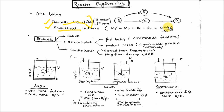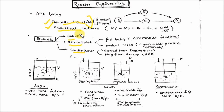A reactor is the vessel in which a biological process is carried out. A biological process is the conversion of substrate into product via cell mass or enzyme. Generally, three types of processes occur in reactor engineering: the first is batch, the second is semi-batch, and the third is continuous.